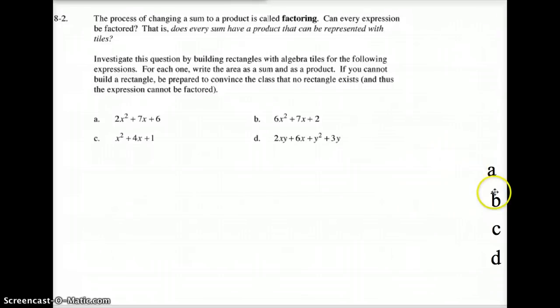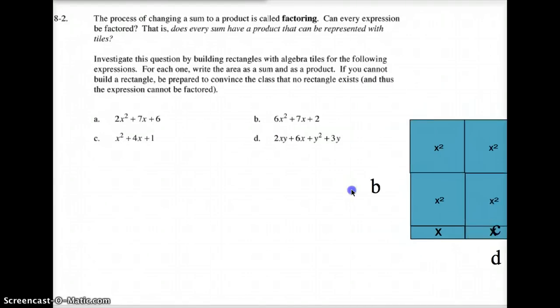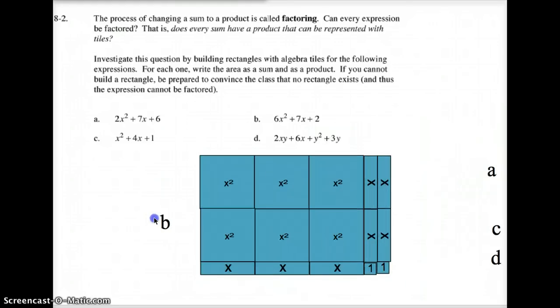All right, I assumed you paused it. Now we are back. So letter B. Did you come up with your 6X squared tiles, your 7X, did I say 6X squared tiles? Your 7X tiles and your 2 tiles. If you came up with this, congratulations, you did very well.